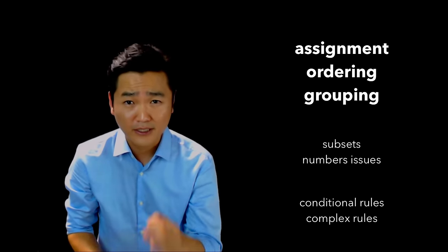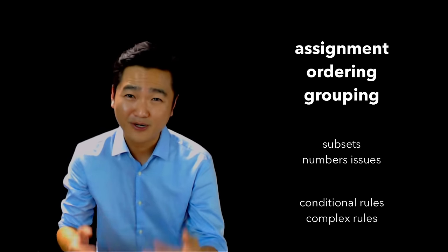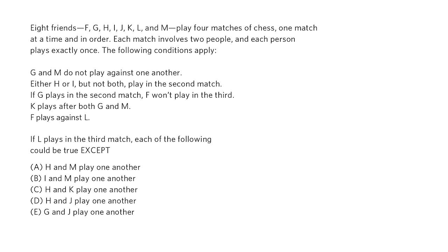Now let's return to the game we saw at the beginning of the video so that we can discuss some specific diagramming and problem-solving strategies. Please go ahead and pause the video if you'd like to try this on your own before seeing the solution. I think it's always a good idea to read the scenario and the rules before you start diagramming. This will help you figure out your priorities, and it'll tip you off on the best way to lay out the game. In this case, we've got eight friends playing four matches of chess in order, and we can set up our base and list our elements like so.